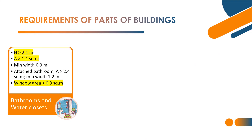Next part: bathrooms and water closets. Bathroom minimum height is 2.1 meters — habitable rooms are 2.75 meters, but bathroom minimum height is 2.1 meters. Minimum area: 1.4 square meters. Minimum width of bathroom: 0.9 meters. In case of attached bathroom — bathroom plus toilet — the area shall be minimum 2.4 square meters, and minimum width is 1.2 meters. Ventilation or window area for bathroom and water closets: minimum 0.3 square meters.